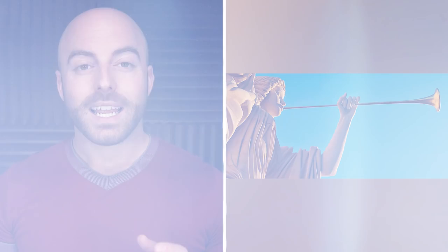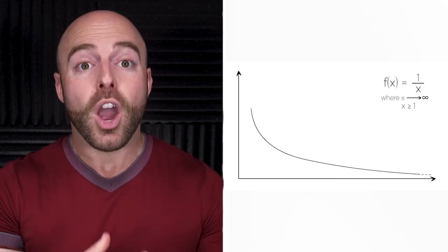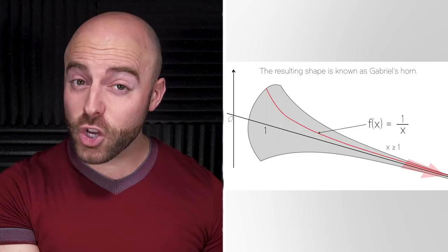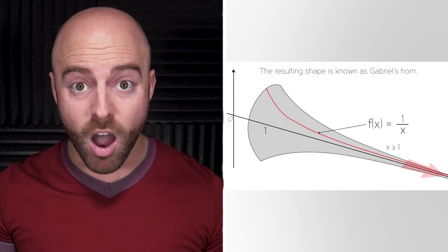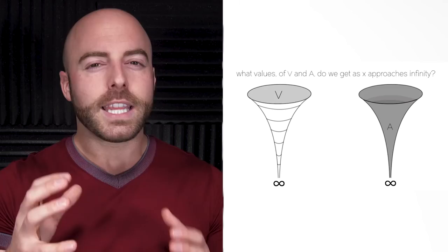Gabriel's horn is named after the Archangel Gabriel, whose horn was associated with the divine and by extension all that is infinite and finite in the world. It all starts when 1/x is plotted with x equaling one to x equaling infinity, all while rotating around the x-axis, which forms a geometric figure in the shape of a horn. The horn has infinite surface area because from the large opening, the horn gets continually smaller and smaller, going on forever without ever closing. But despite this, mathematically it also has finite volume.